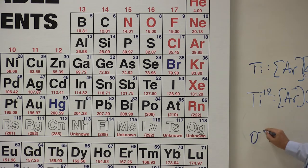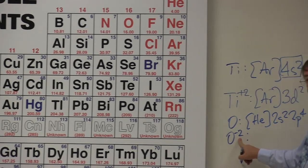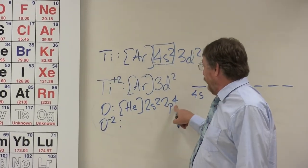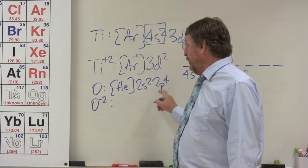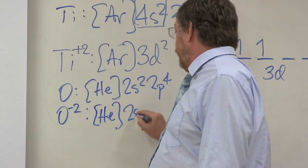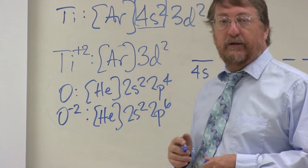So if I'm doing O minus 2, obviously normal oxygen is helium, 2s2, 2p4, but now it's negatively charged. That means there's extra electrons, two extra electrons. Where are those going to go? They're going to go into 2p. So we're going to have helium, 2s2, 2p6, which is the neon electron configuration.